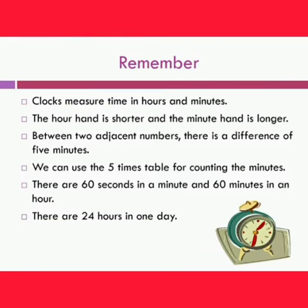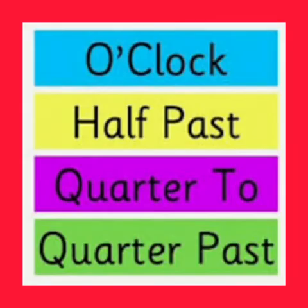Let's learn some key points. Clocks measure time in hours and minutes. The hour hand is shorter and the minute hand is longer. Between two adjacent numbers, there is a difference of five minutes. We can use the five times table for counting the minutes. There are 60 seconds in a minute and 60 minutes in an hour. There are 24 hours in one day.